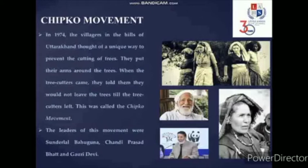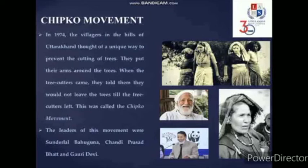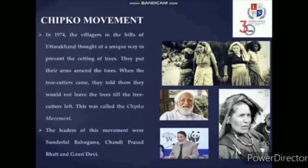Now let's talk about the Chipko movement. In 1974, the villagers in the hills of Uttarakhand thought of a unique way to prevent the cutting of trees. They put their arms around the trees. When the tree cutters came, they told them they would not leave the trees until the tree cutters left. This was called the Chipko movement. The main leaders of this movement were Sundarlal Bahuguna, Chandi Prasad Bhatt and Gauri Devi. You can see pictures of these three leaders on this slide.